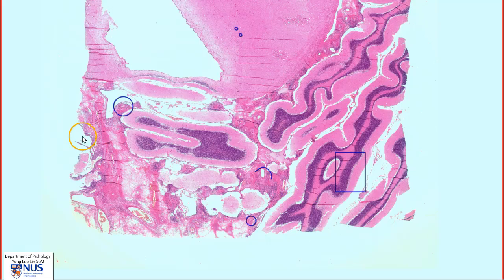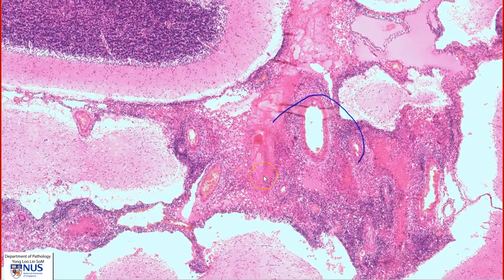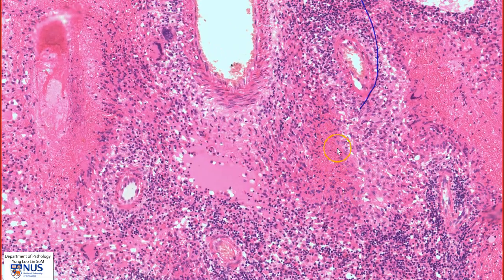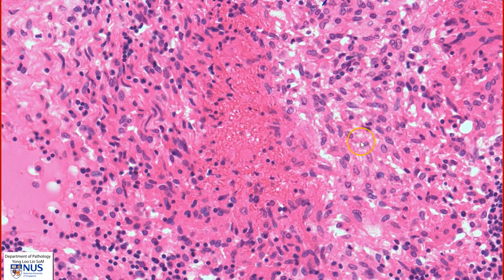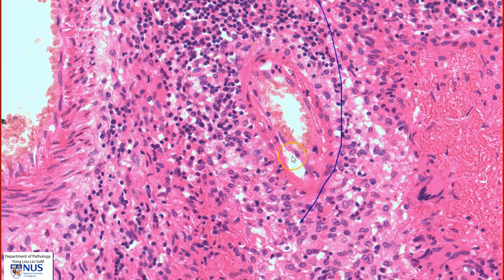In summary, this is a virtual microscopy slide showing the features of tuberculous meningitis, where the subarachnoid space is full of necrotizing granulomatous inflammation as well as chronic inflammation. Here we have a necrotizing granuloma, composed of epithelioid histiocytes with an area of central necrosis. Very often, the leptomeningeal blood vessels are also damaged, giving rise to thrombosis and potential infarction of the brain parenchyma. Thank you.